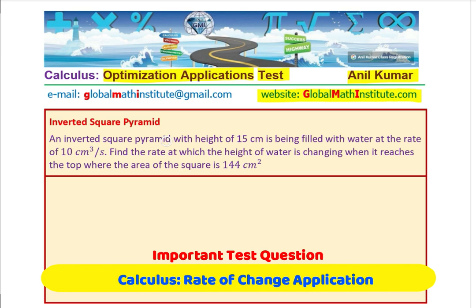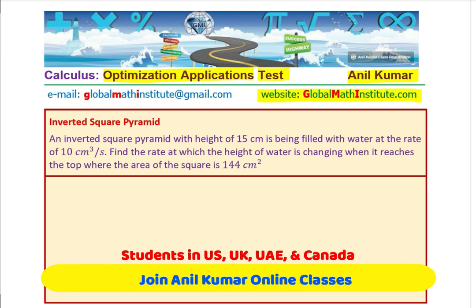An inverted square pyramid with height of 15 cm is being filled with water at the rate of 10 cm³ per second. Find the rate at which the height of water is changing when it reaches the top, where the area of the square is 144 cm². You can pause the video, answer the question, and then look into my suggestions. We need to visualize and then formulate a strategy to solve.